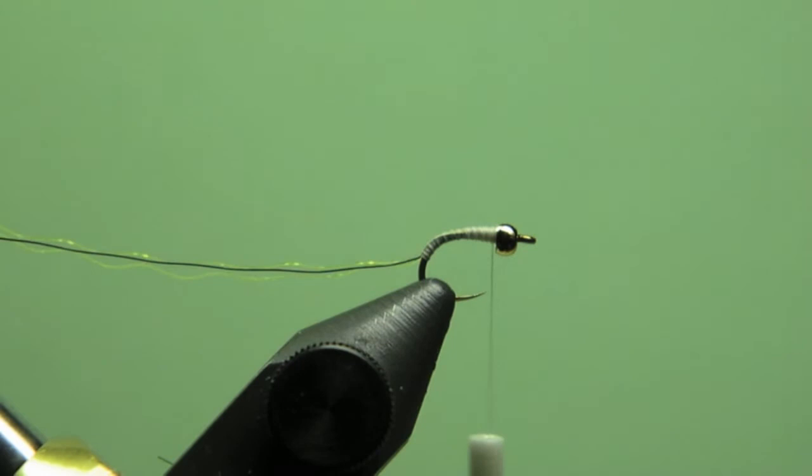The way Charlie Craven likes to do it, he likes to start it off with more of a perpendicular type approach. By doing that he can keep all the black perpendicular to the hook shank, which makes it look better in his way. I don't think the fish care, like I'm saying.